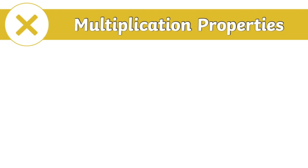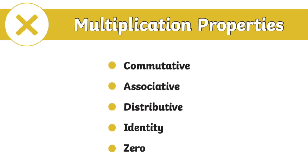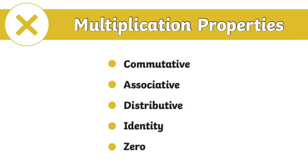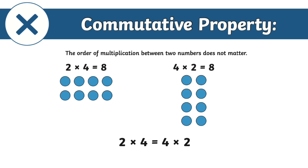Multiplication properties are rules that are used while multiplying numbers. Let's take a look. Commutative: the order of multiplication between two numbers does not matter. Numbers can be multiplied together and the answer is always the same, regardless of the order in which the numbers are multiplied.